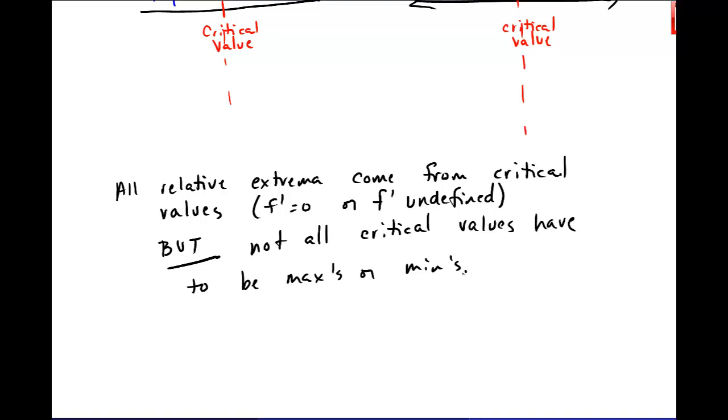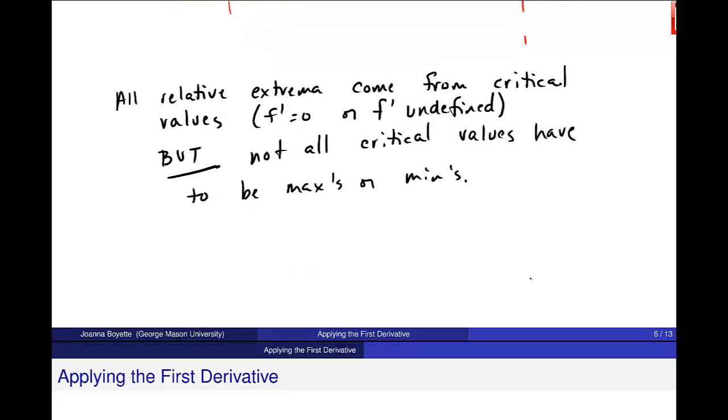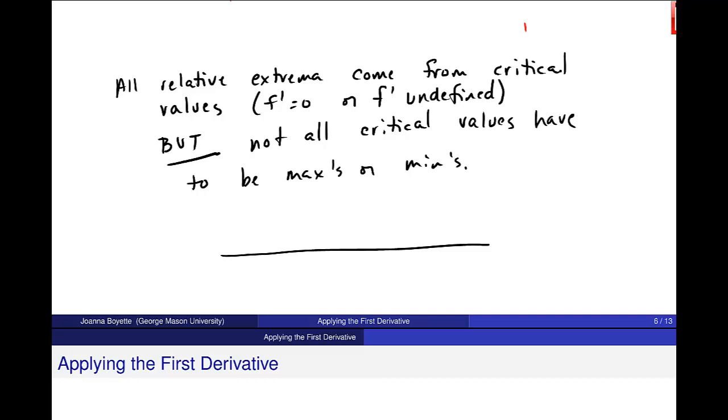You can have a critical value and it's possible that your picture looks something like this. Here's your critical value. It's possible that on this side it's going up and on this side it's still going up. Like f prime is positive here and f prime is positive here. In which case you don't get a relative max or a relative min. That's entirely allowed. It's just a critical value. So we do have to do this testing on both sides to see if our critical values are maxes or minimums.